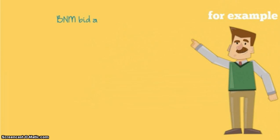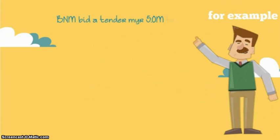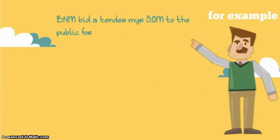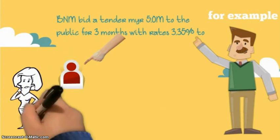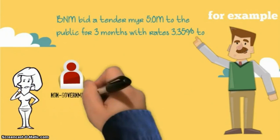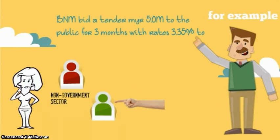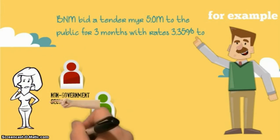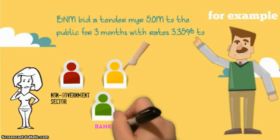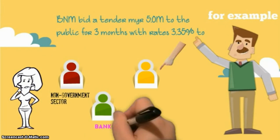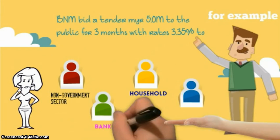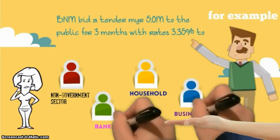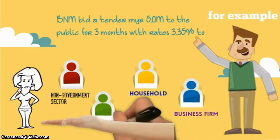For example, BNM bid a tender of RM5 million to the public for 3 months at a rate of 3.35% to the non-government sector — bank, household, and business firm.